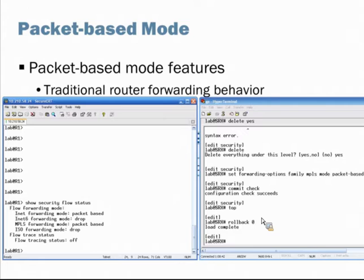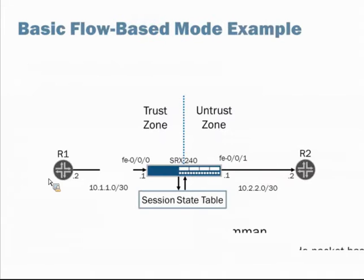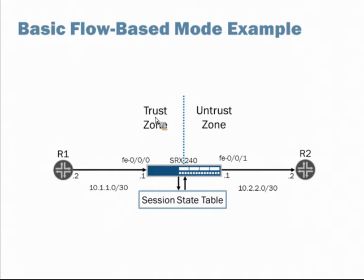Now let's look at a basic flow-based mode example. This diagram represents how our devices are currently configured — Router 1 (R1) is connected on one interface of the SRX device and Router 2 (R2) is connected on another. Each has a corresponding interface within a security zone, and there's a policy to allow any traffic from the trust zone out through the untrust zone. While in flow-based mode, the SRX records information in the session state table.